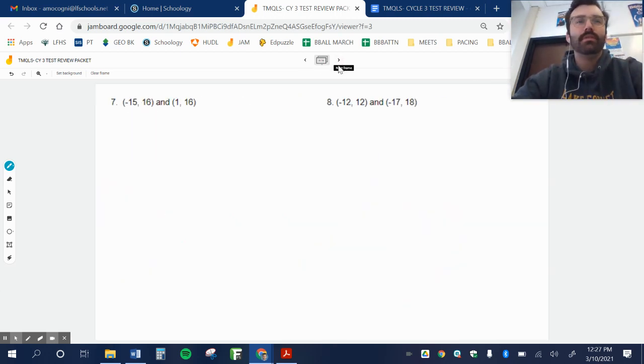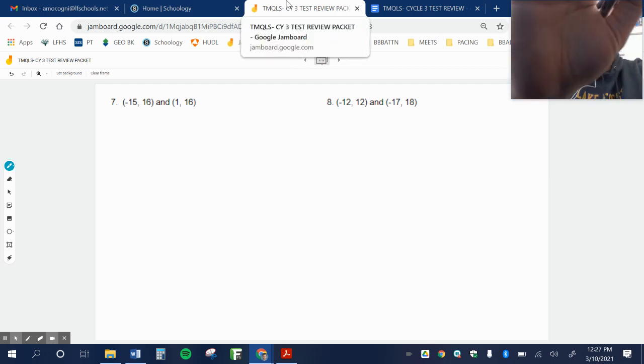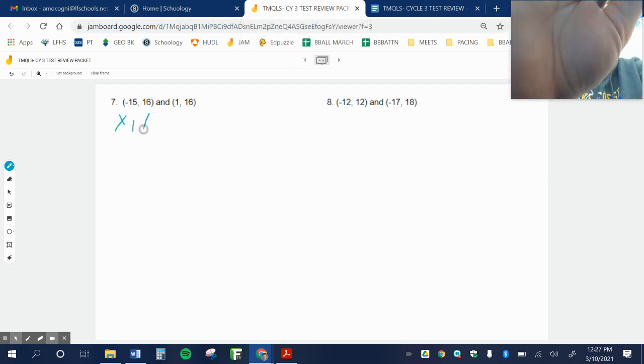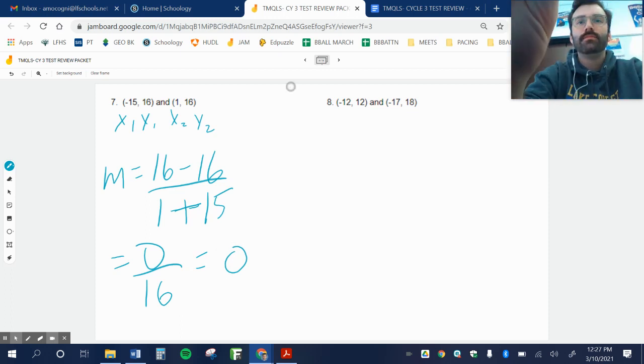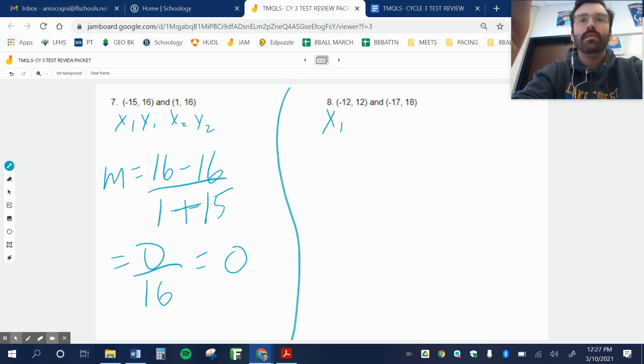Maybe I'll stop here. I don't know, I'll keep going. We've got some more slope problems. x1, y1, x2, y2. M equals 16 minus 16, over 1 minus negative 15, so one big plus, which is 0 over 16, which is just 0. So, 0 over any number is just 0.